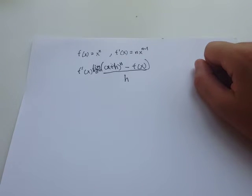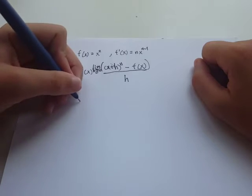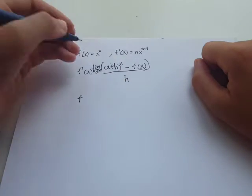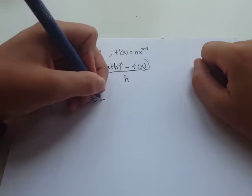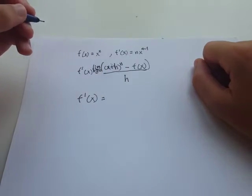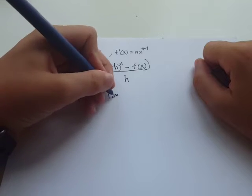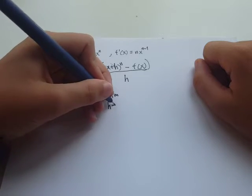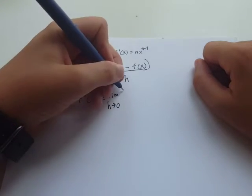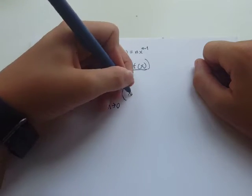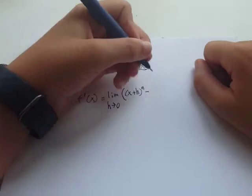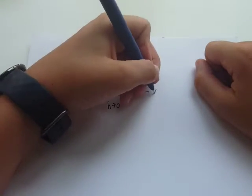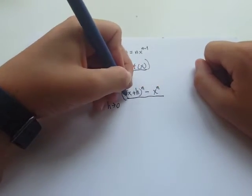Now, what is f of x? f of x is just this, so let me rewrite this and also include the limit because I forgot here. So limit as h approaches 0 of x plus h to the n minus x to the n over h.